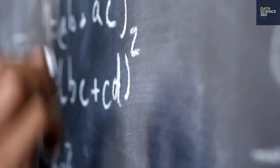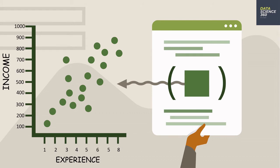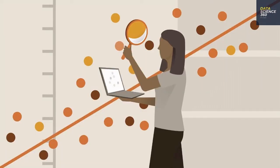Let's look at an example to understand it better. Here we have a dataset with years of experience and income. This is how it looks when we plot them in a graph with X and Y axes. Now the problem is to predict the income for the X values that are not in this data. But how do we do it?